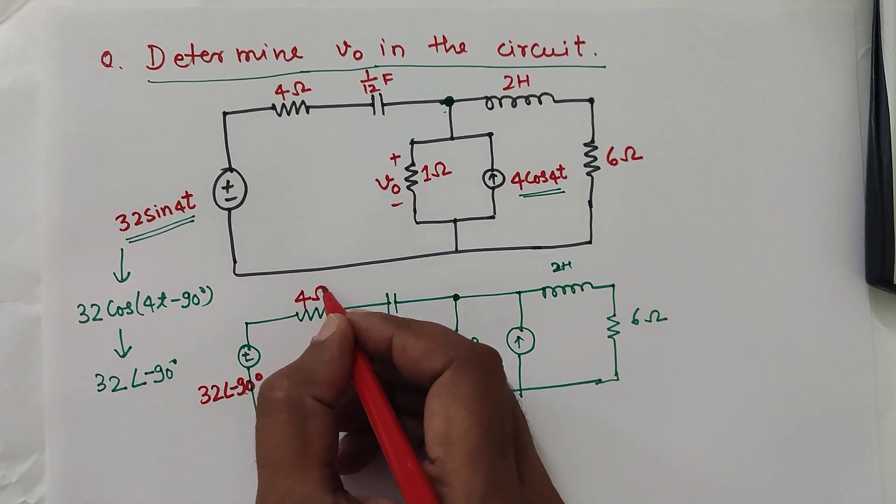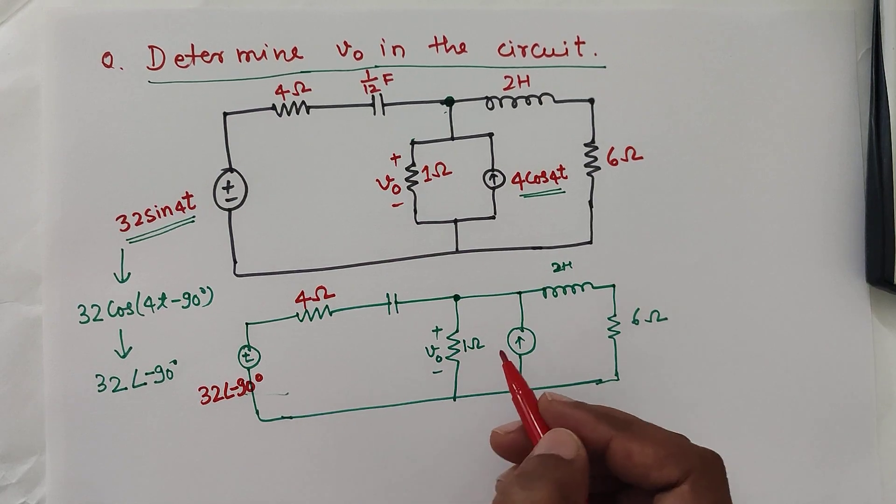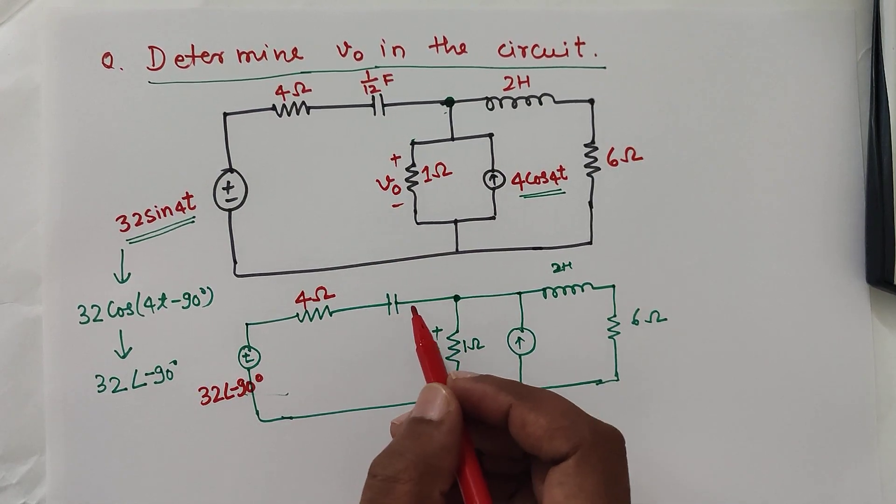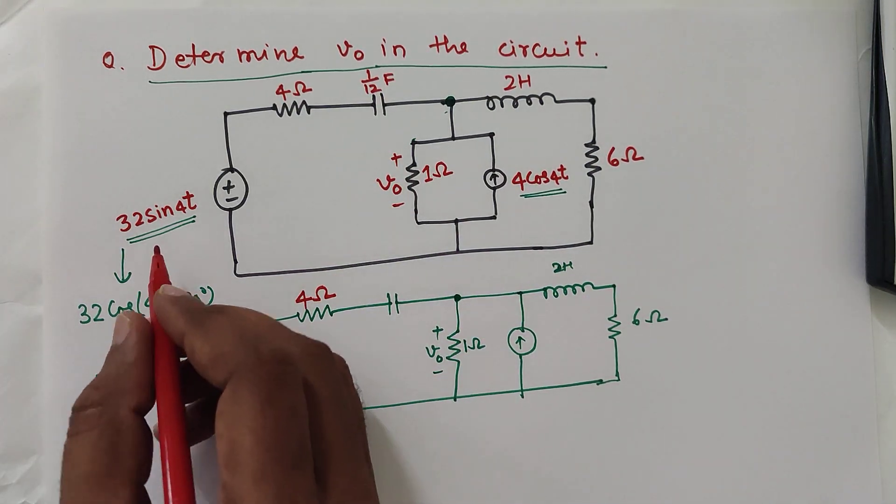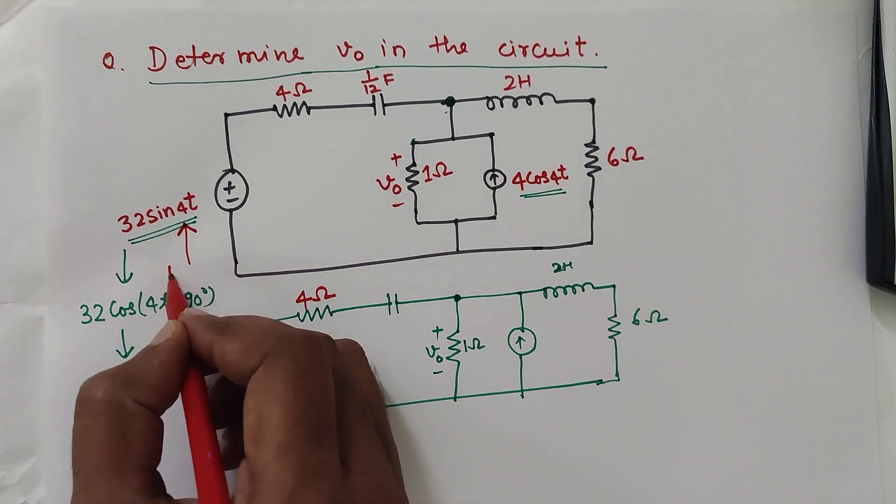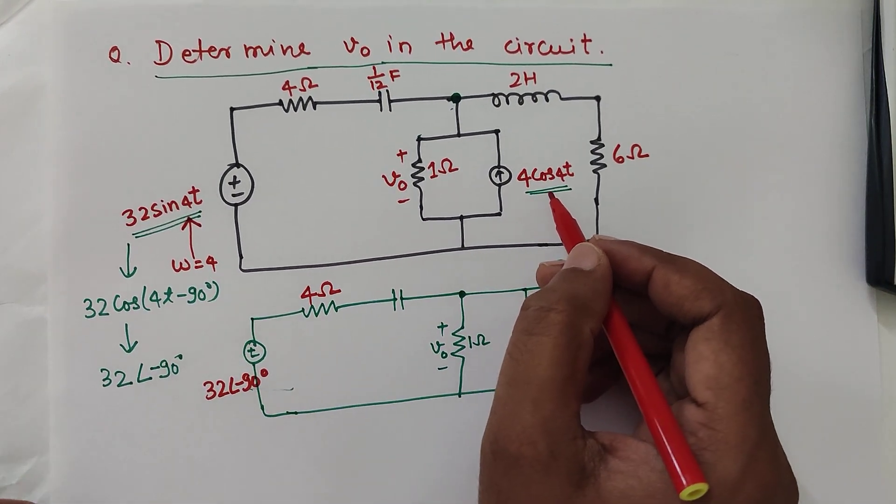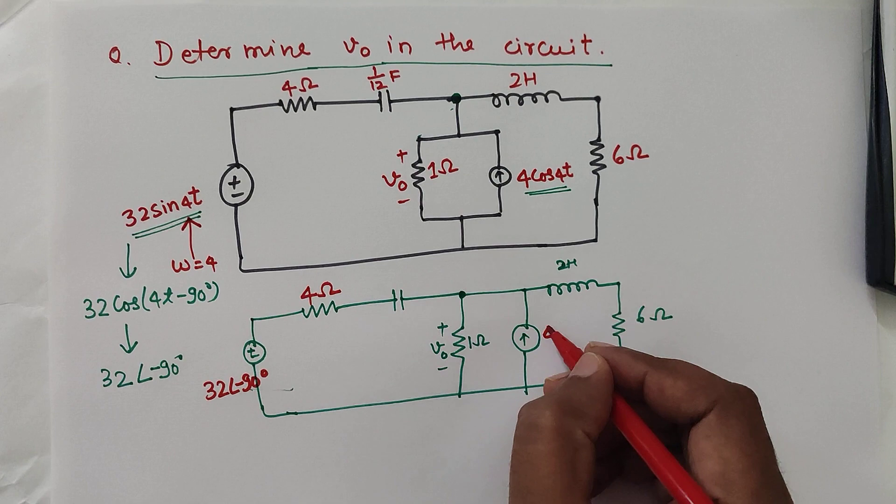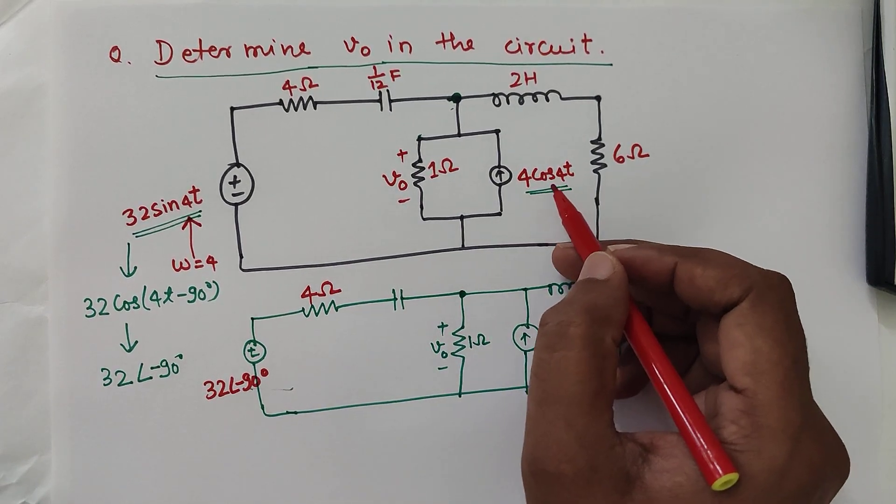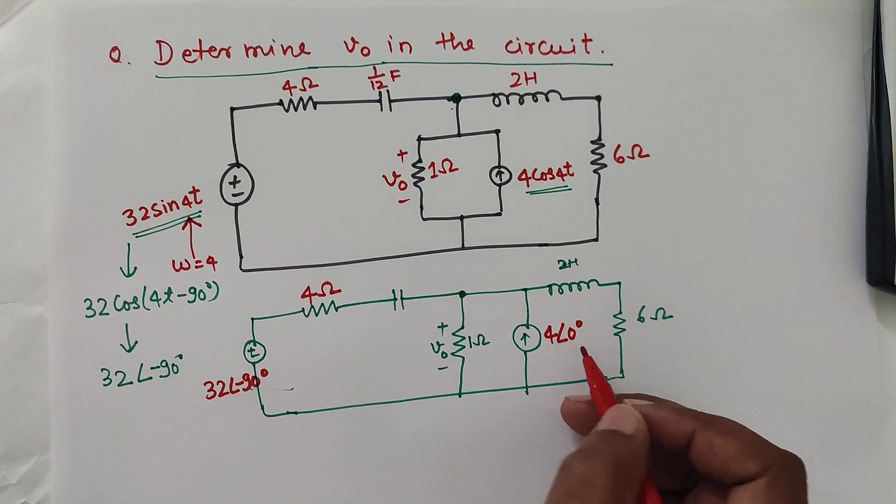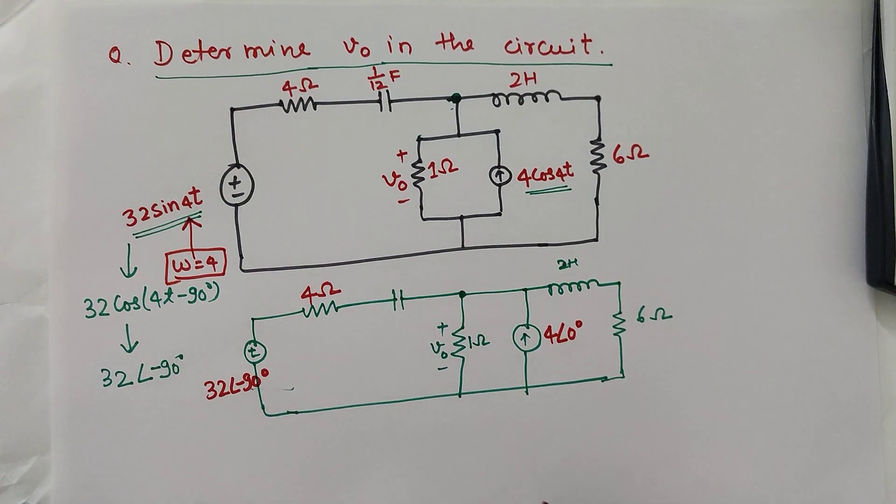The resistance will remain same: 4 ohm and 6 ohm here, and in this case 1 ohm. For the capacitor, let us convert this value for the given frequency. Frequency is omega equal to 4. This 4 cos 40t can be written as 4 angle 0 degrees because there is no phi involved in this. So phase is 0 degrees. Omega is equal to 4 radian per second.